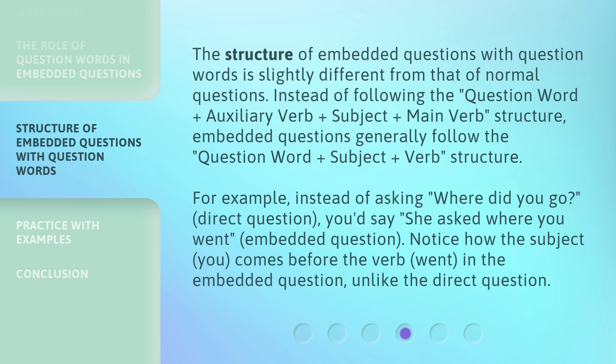The structure of embedded questions with question words is slightly different from that of normal questions. Instead of following the question word plus auxiliary verb plus subject plus main verb structure, embedded questions generally follow the question word plus subject plus verb structure. For example, instead of asking 'where did you go?' (direct question), you'd say 'she asked where you went' (embedded question). Notice how the subject 'you' comes before the verb 'went' in the embedded question, unlike the direct question.